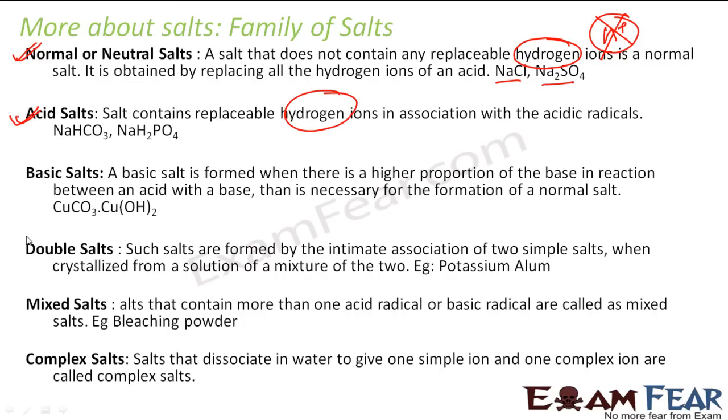Acidic salts have extra H+ ions that are replaceable. For example, NaHCO3 and NaH2PO4 are acidic salts because they contain replaceable H+ ions.